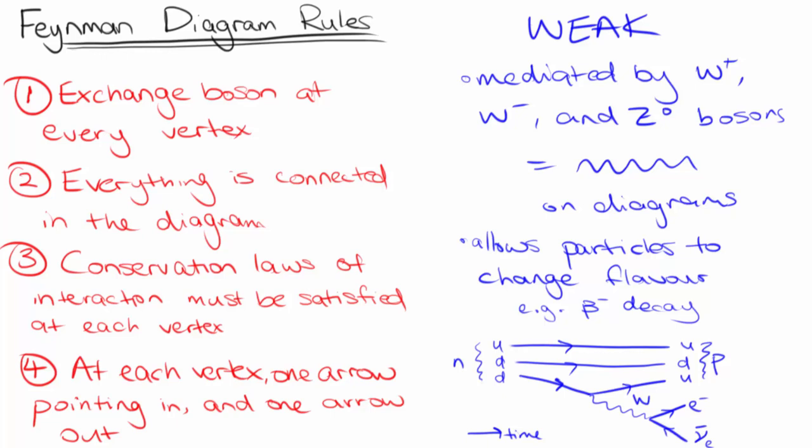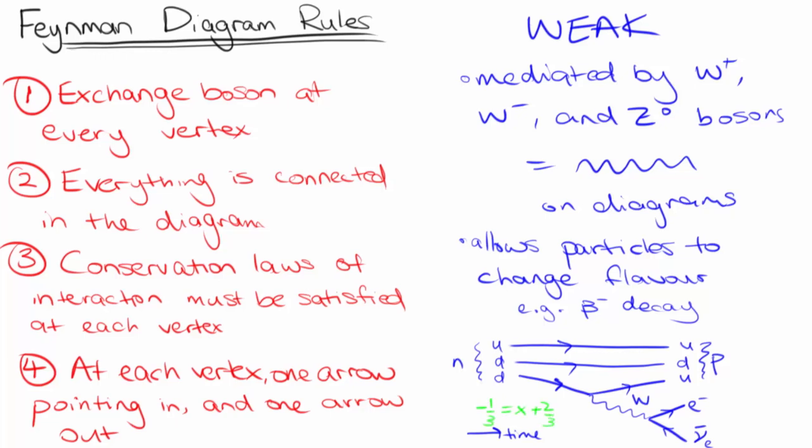On the left we have a down quark, which has a charge of negative one third, and on the right we have the charge of the W, which we will call X, and an up quark, which has a charge of positive two thirds. For charge to be conserved, the left hand side must equal the right hand side, so X is minus one. This means that our exchange boson must be the W minus.